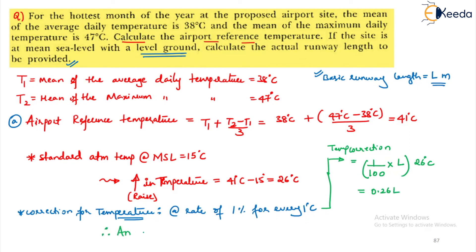Therefore, what will be the actual length of runway, the basic runway length L plus the length of the corrected temperature length. 0.26 L. That will be equal to 1.26 L meters. Right.